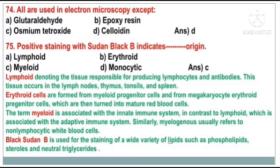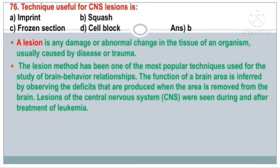Sudan Black B is used for the staining of a wide variety of lipids such as phospholipids, sterols, and neutral triglycerides. Question number 76. The technique useful for CNS lesions is — the answer is option B: Squash.